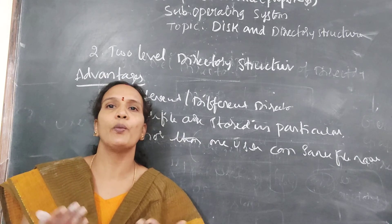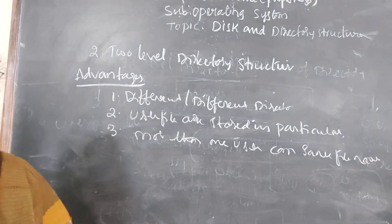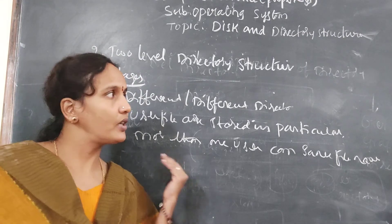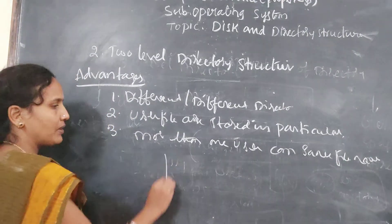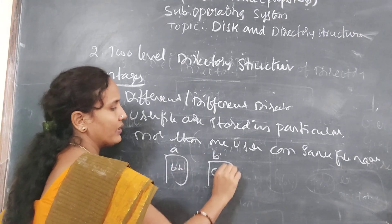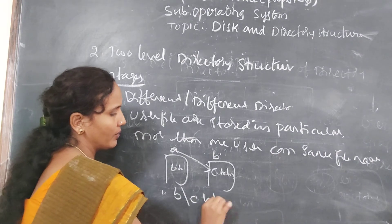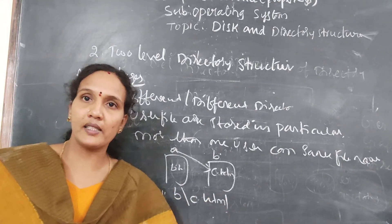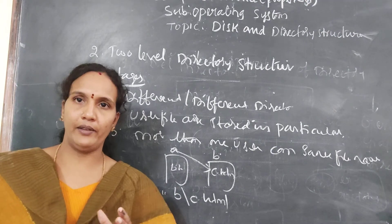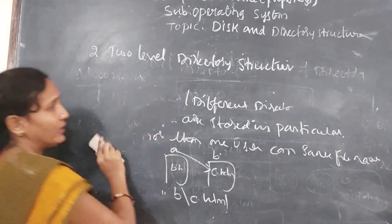When a user wants to delete, they just open their directory and delete their files. If a user wants to access a file of another directory, they need to give the complete path. For example, if there is an A directory with b.html inside, and a B directory with c.html inside, if A wants to access c.html they give the path B/c.html. So if one user wants to access the file of another user, they need to give the complete path of that file.